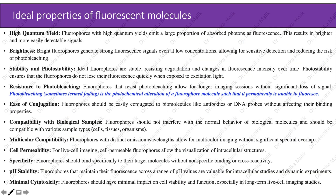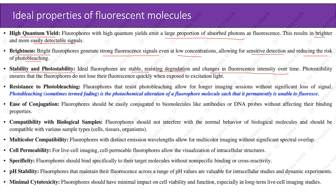Ideal properties of fluorescent molecules: high quantum yield — fluorophores with high quantum yield emit a large proportion of absorbed photons as fluorescence, resulting in brighter and more easily detectable signals. Brightness — bright fluorophores generate strong fluorescence signals even at low concentrations, allowing for sensitive detection and reducing the risk of photobleaching. Stability and photostability are also important ideal properties.